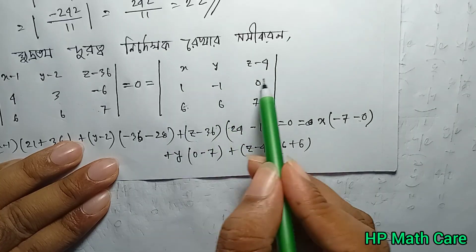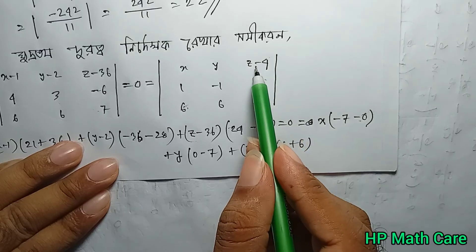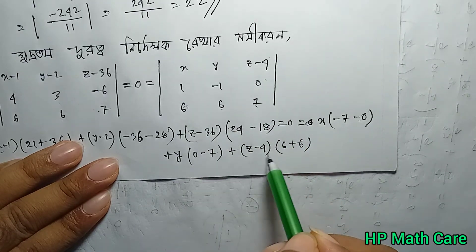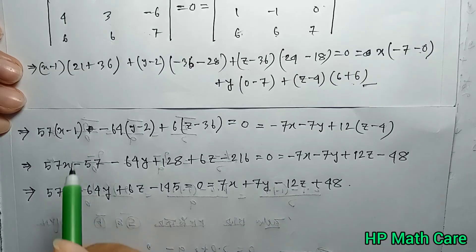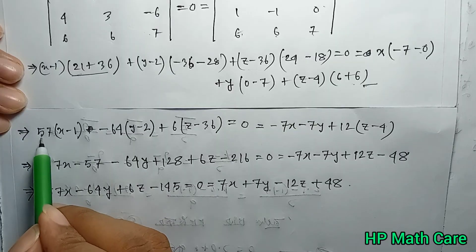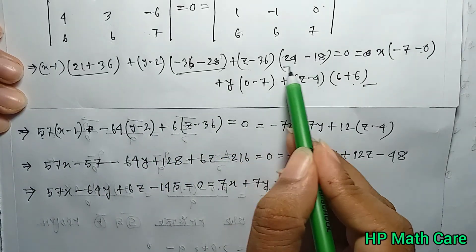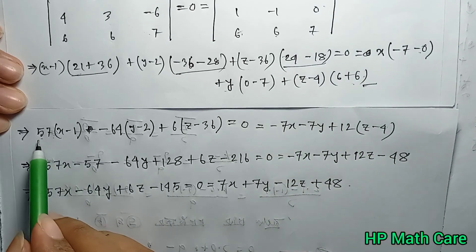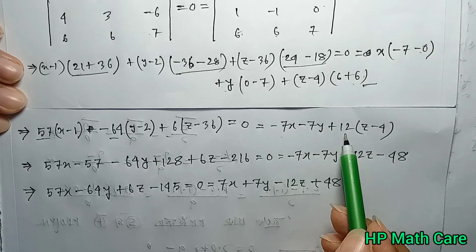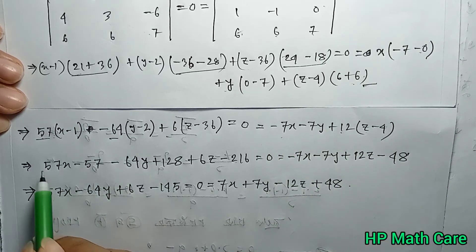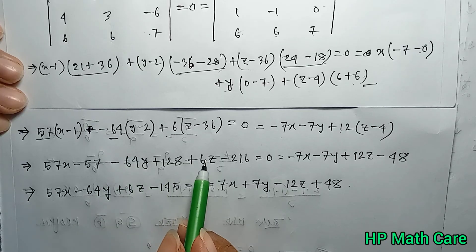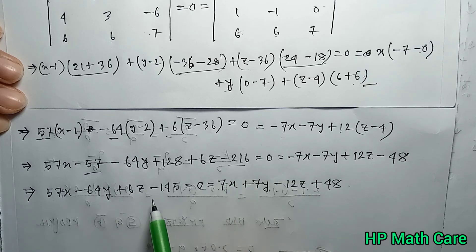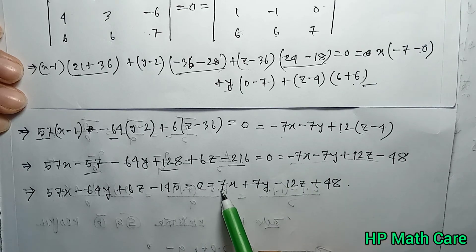Z minus 36, 0 minus 7, j minus 4. With 6 plus 6, minus 64, minus 7. We can multiply to get 0 equals the result. So let's have a look at this one.